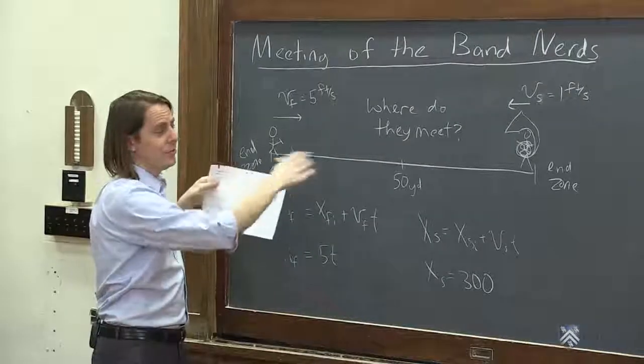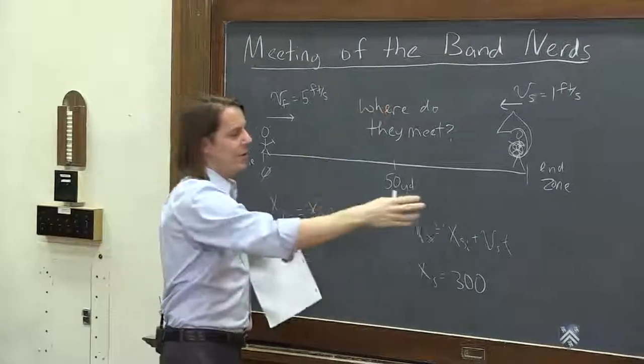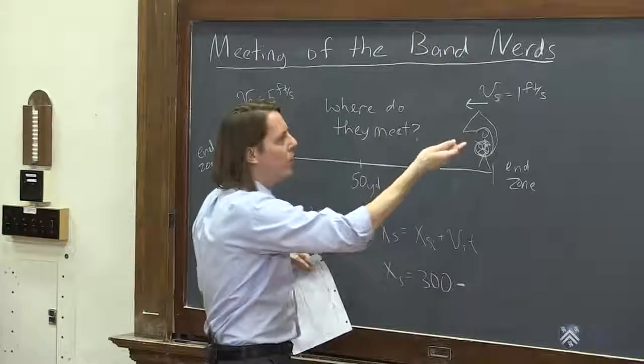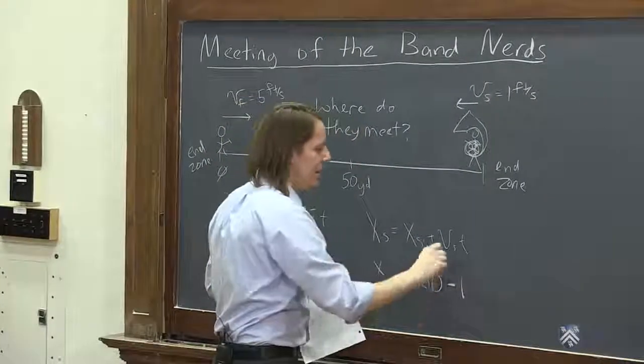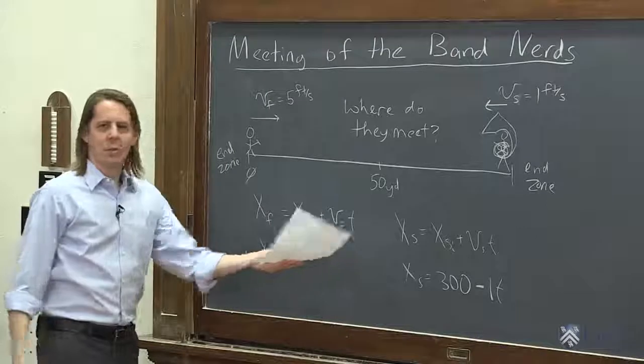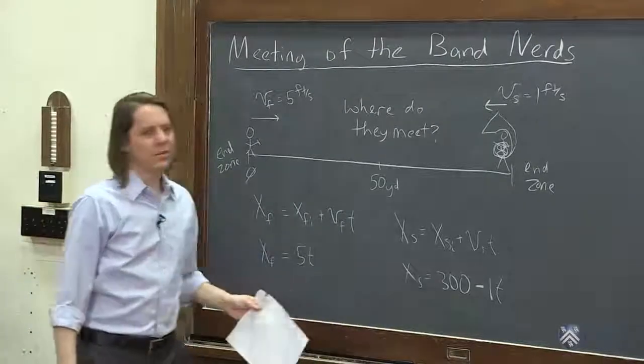So their initial is 300, and then their velocity is actually backwards, right? So these are vectors in 1D, the vs would be the vector component, but it is negative because it's this way. So minus, and it's 1, that's kind of awkward. I'll write a 1, and then times time. So there's the two equations that describe their motion, 5t and 300 minus t.